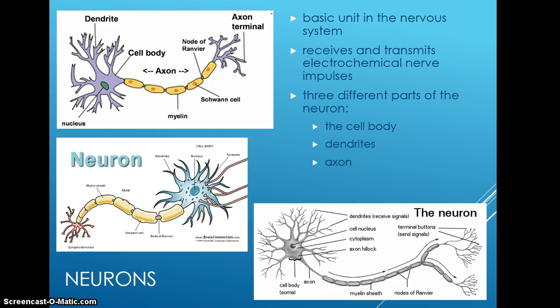Dendrites are highly branched extensions that carry a nerve impulse into the cell body. The cell body is like any other cell, with a nucleus serving as a control center.